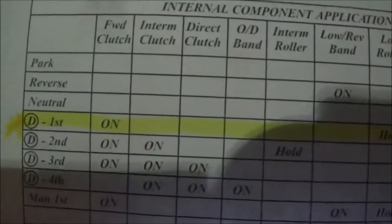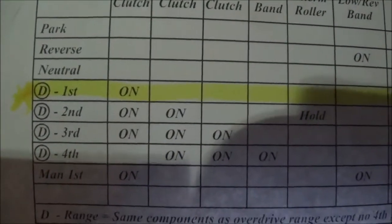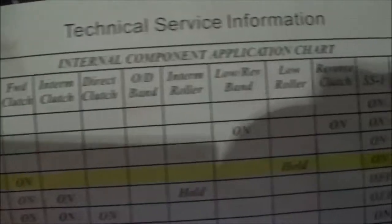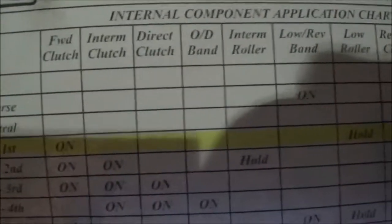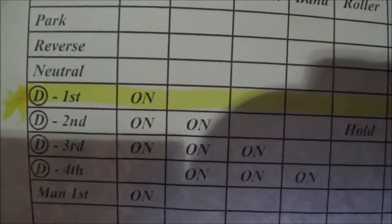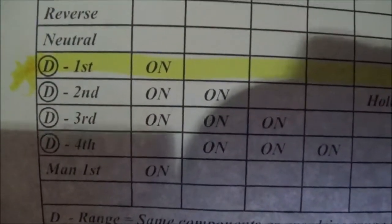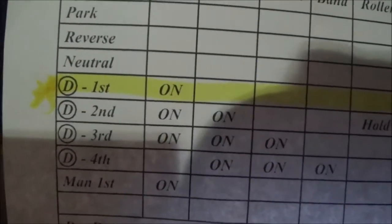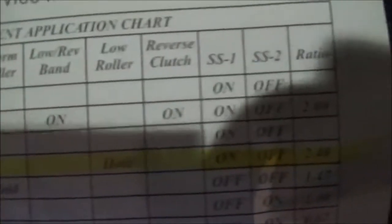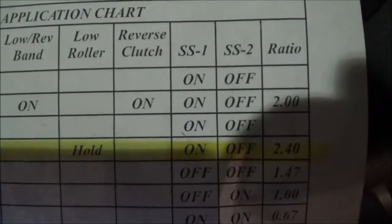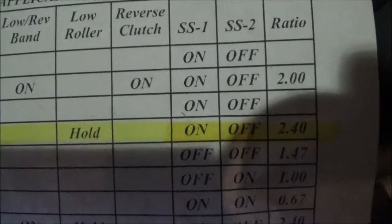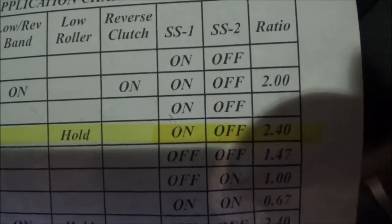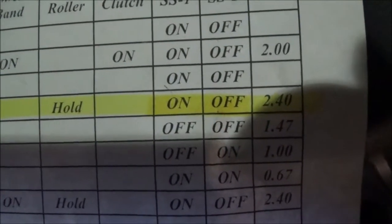Looking at this technical manual for the 4R70W/75: in park, reverse, neutral, and first — which is the drive position — shift solenoid 1 should be on and shift solenoid 2 should be off. So you've got on, off, on, off.